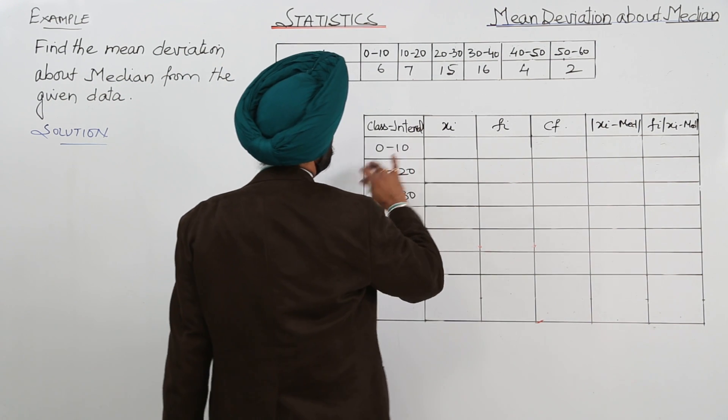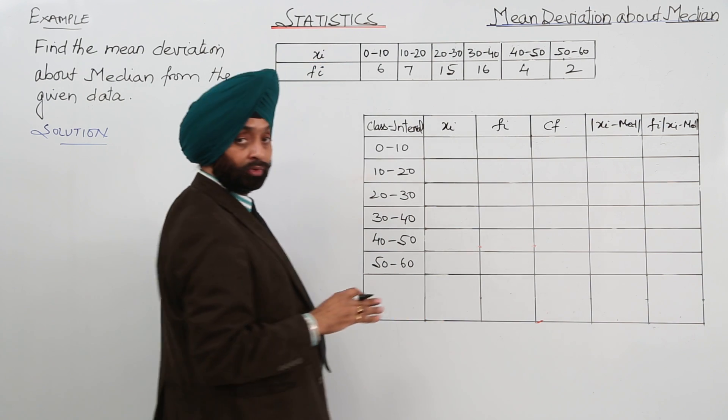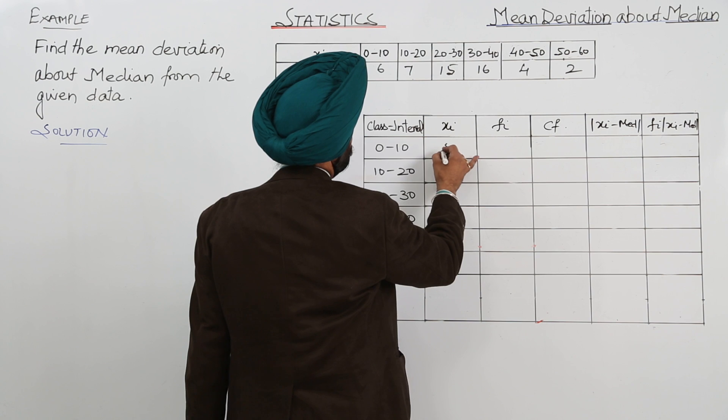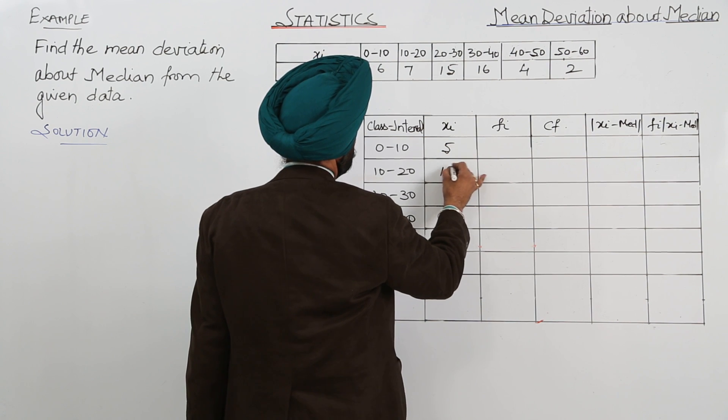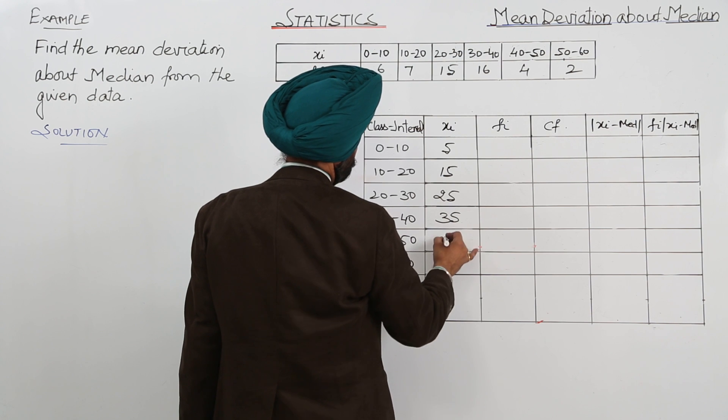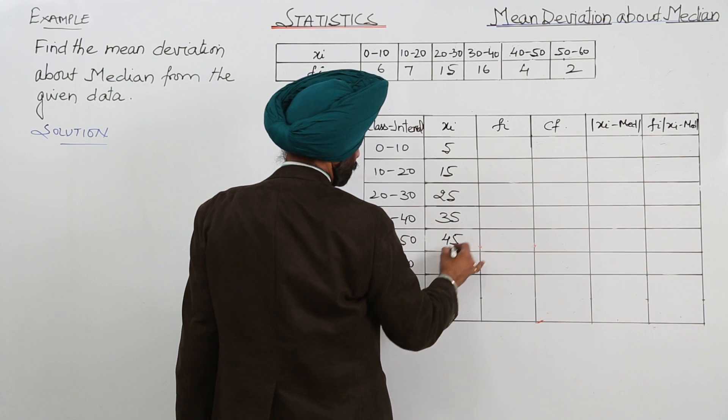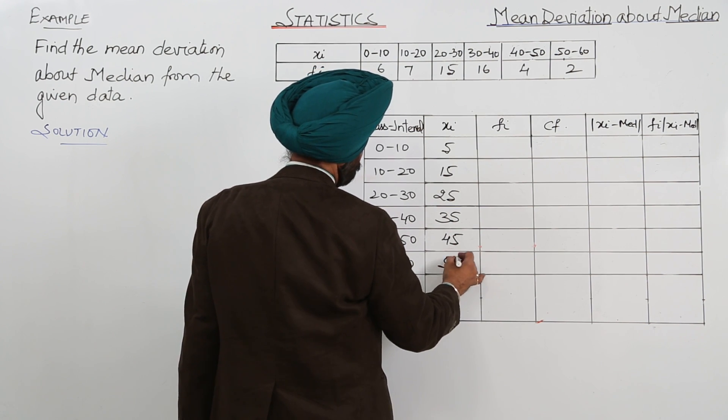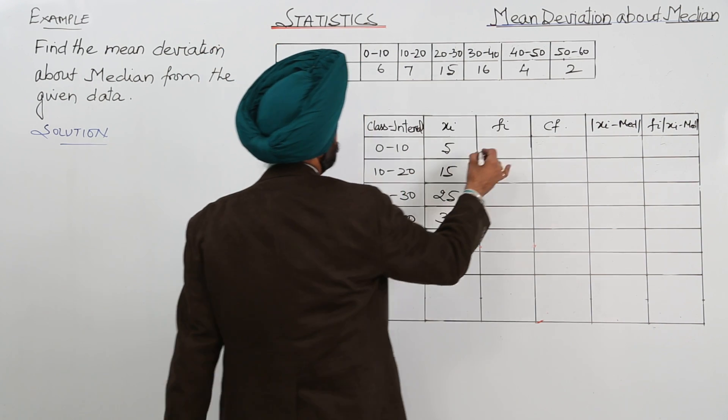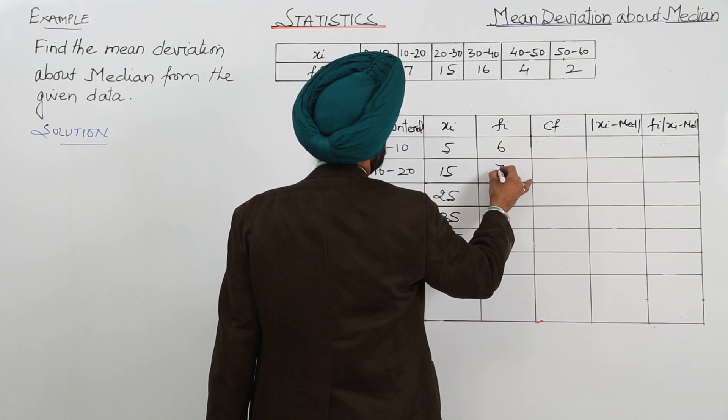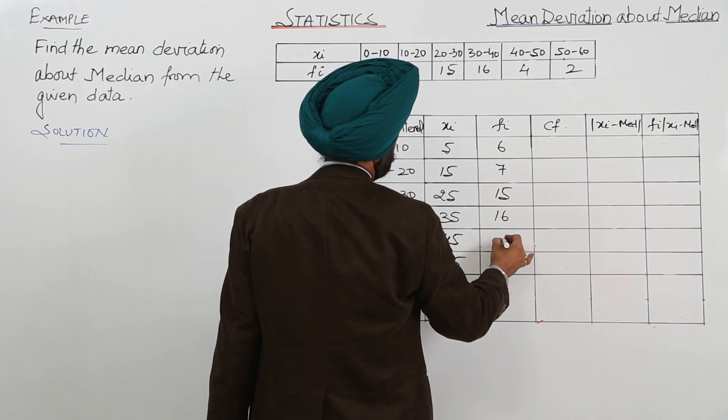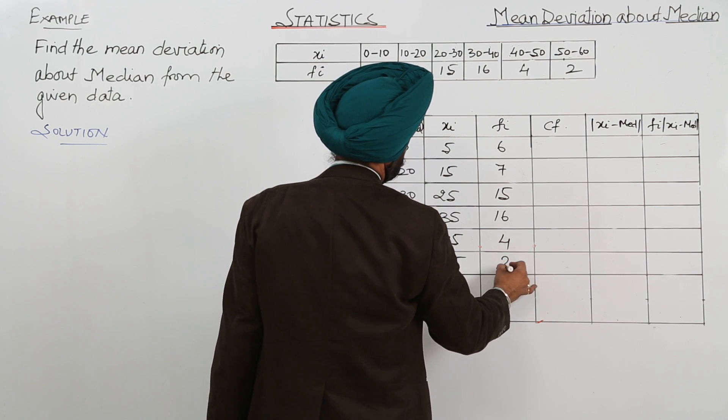Now Xi, sum of the upper and the lower term divided by 2 or the mid value: 5, 15, 25, 35, 45, 55. Now frequency given 6, 7, 15, 16, 4, and 2.